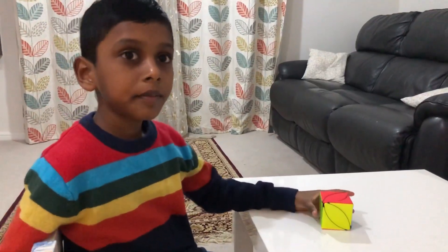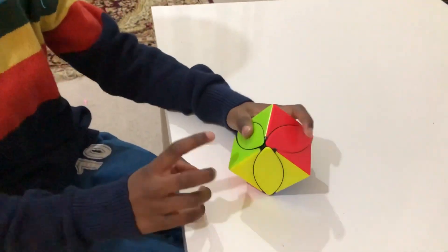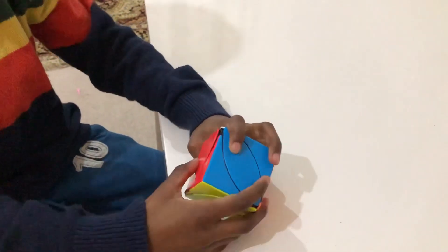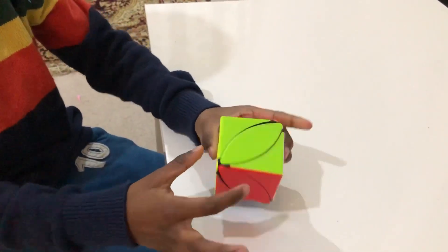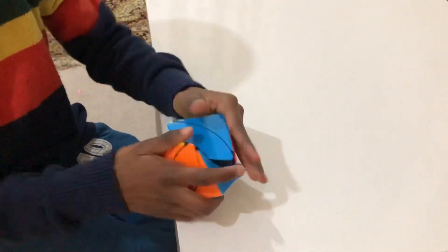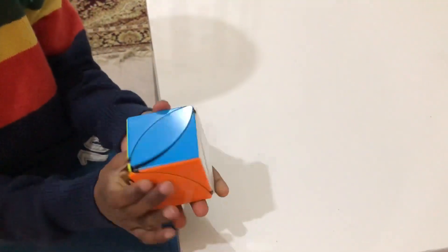Always remember, back side of green is blue, back side of red is orange, back side of yellow is white.